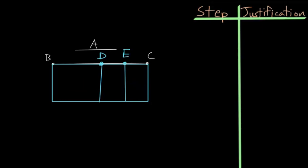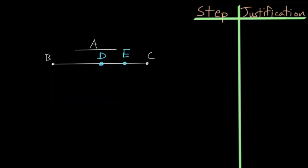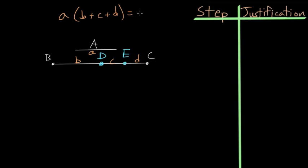Another way to look at this proof is from a more algebraic point of view. If we call this length little a, BD we call little b, DE we call c, and EC we call d, the Greeks thought of multiplication as taking two lines and forming a rectangle where its area is the product of those two lines. So we're essentially taking A and multiplying it by BC, but BC is just b plus c plus d — giving us a·b + a·c + a·d. You might recognize this as the distributive property, so this first proposition is essentially proving it.